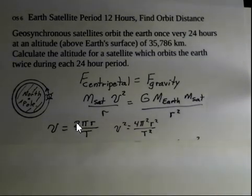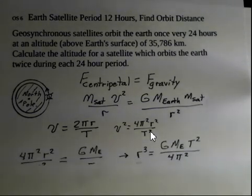The speed is distance divided by time. The distance is the circumference of the circle, 2πr, and the period is going to be the 12 hours. We need to substitute for speed squared. So we square 4π²r² over T². And now let's go ahead and make that substitution.